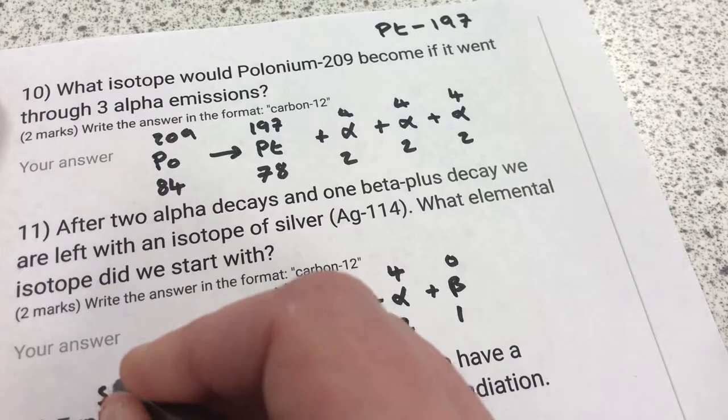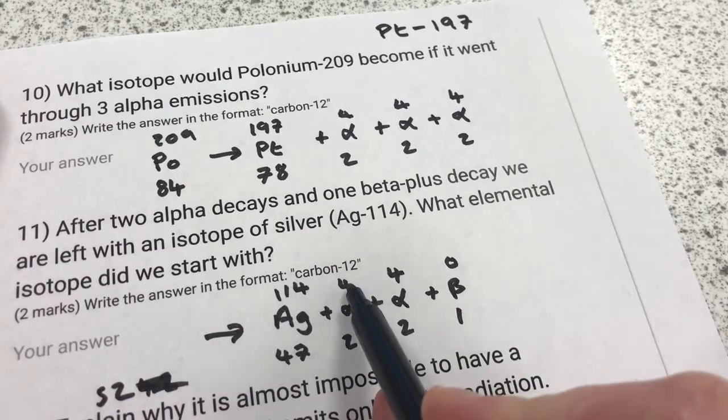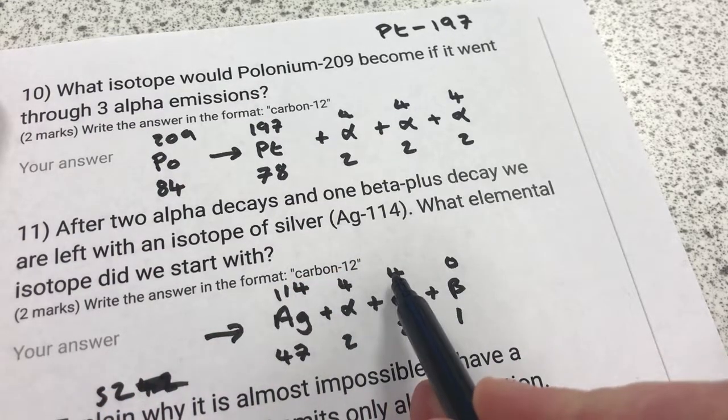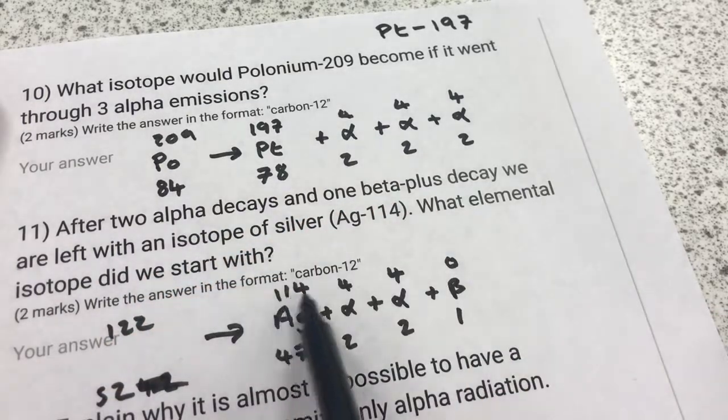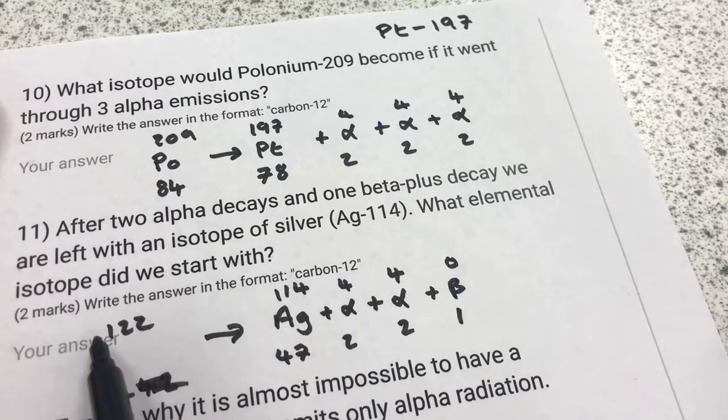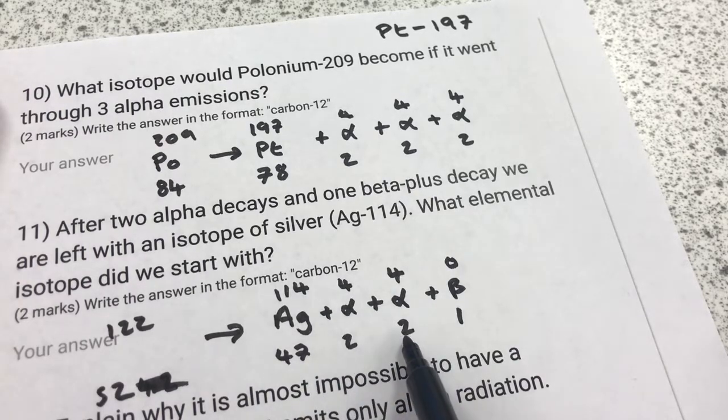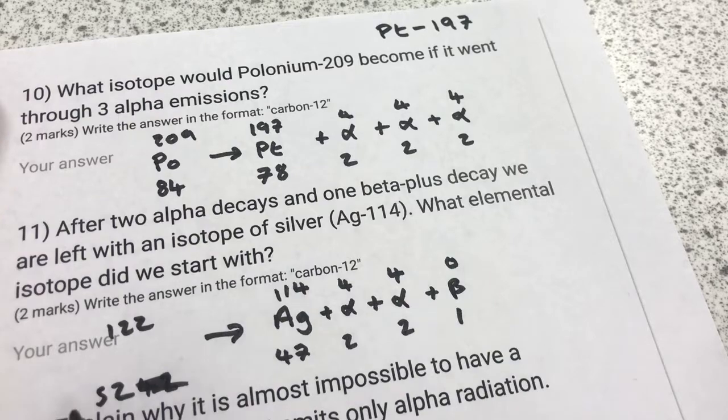Heavens to Betsy, 52. And then we've got 114 plus 4 is 118, 122, so 122. Just make sure this is all adding up, 114 plus 4 plus 4 is 122, check. 47 plus 2 plus 2 plus 1 is 52, check.